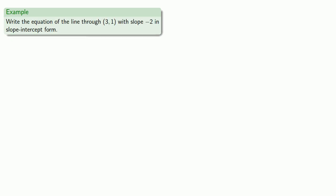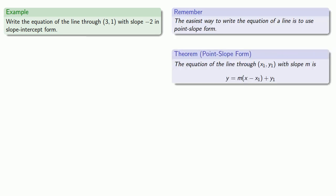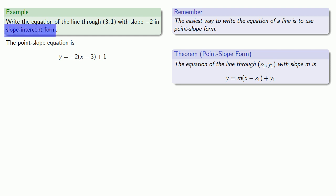How about writing the equation of a line in slope-intercept form? Let's try to write the equation of the line through (3, 1) with slope negative 2 in slope-intercept form. The important thing to remember is that the easiest way to write the equation of a line is point-slope form. Once we have a point and a slope, we can write down the equation of the line immediately.